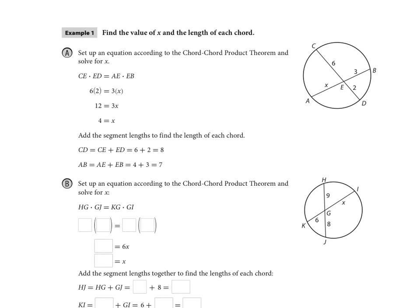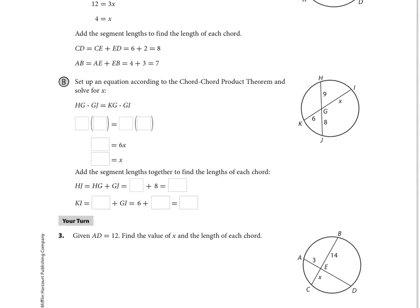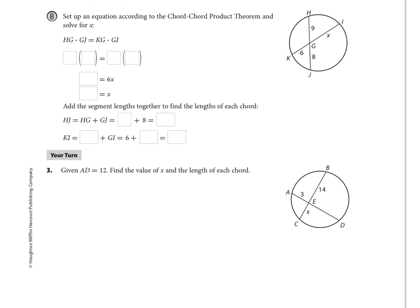In part B, as we fill in, we've got a new circle scenario here. We're going to set up the equation the same exact way with the chord-chord product theorem, and we're going to solve for X. So in this case, we have HG times GJ, nine times eight, is going to equal the product of the other two parts of the other chord, which is six times X. Quick multiplication, 72 is equal to six X, and therefore 12 is equal to X.